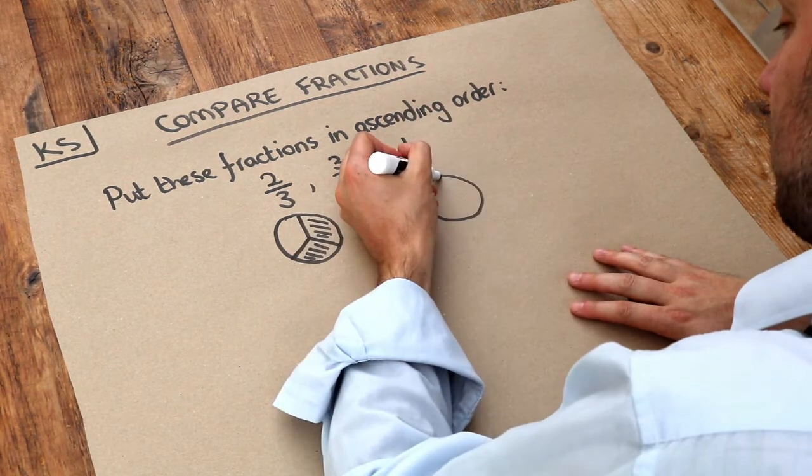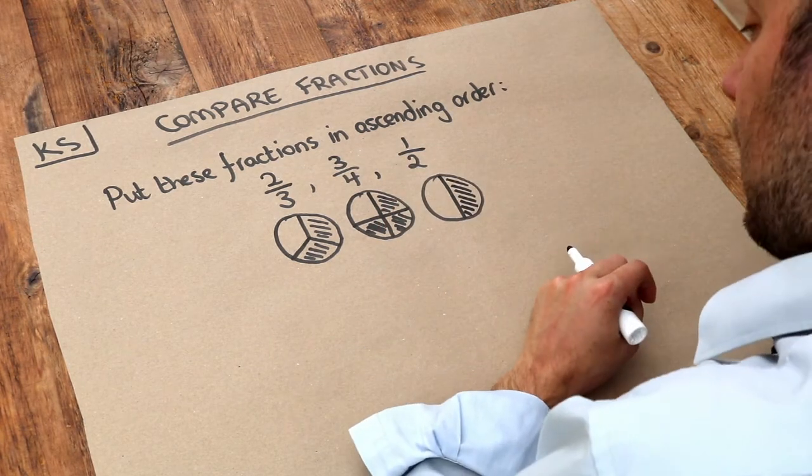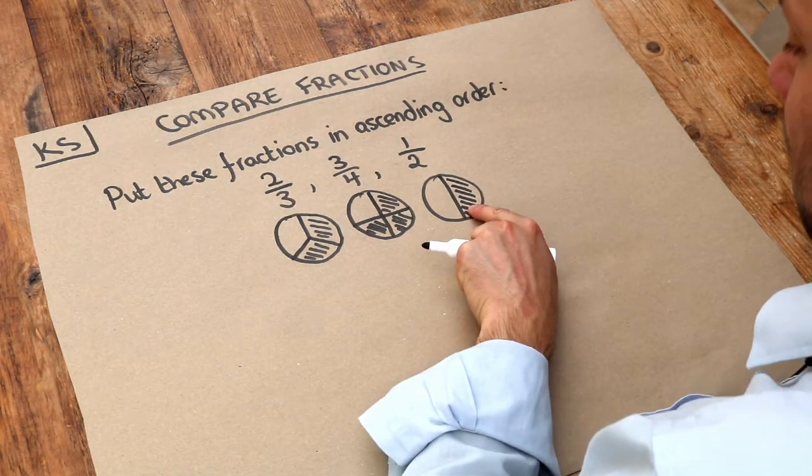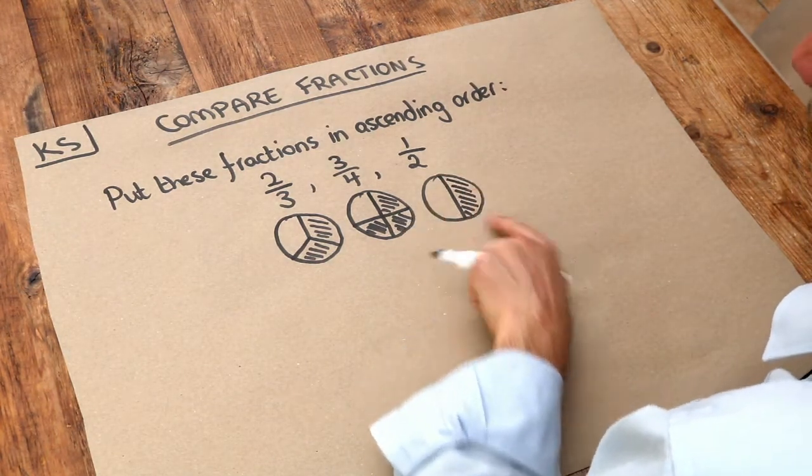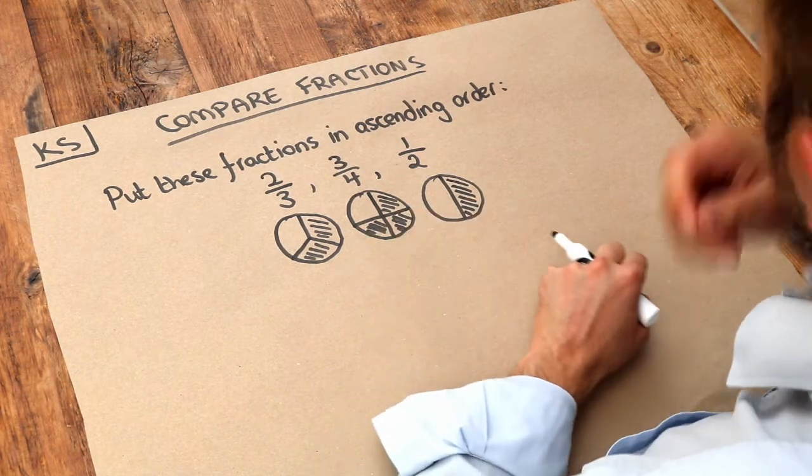And one-half, we just split it into two and we just want one of those halves. Just looking at these, we can see immediately that that is the smallest value because we have the least amount of pizza there, and that is the largest value—we have the most amount of pizza here.